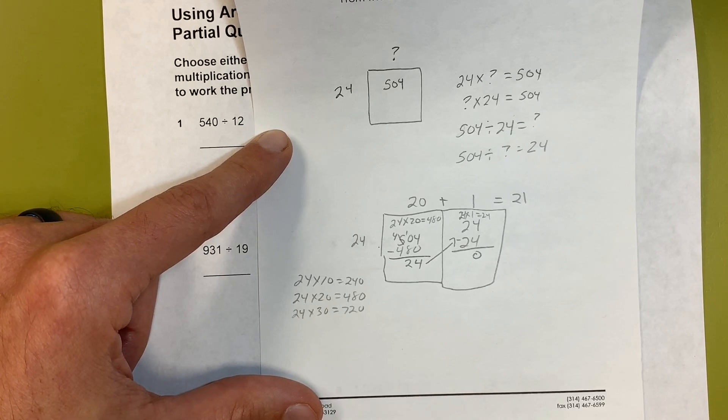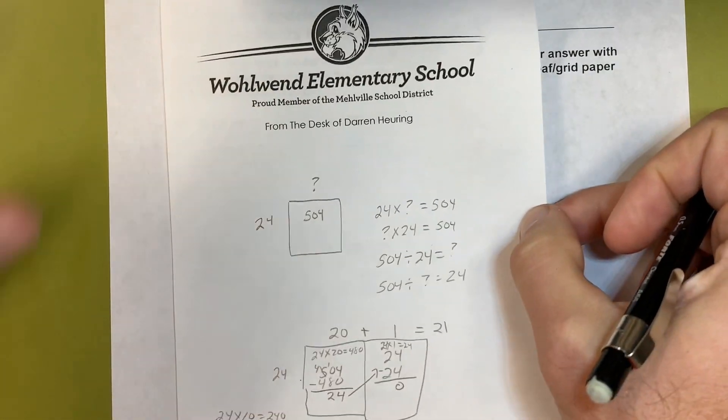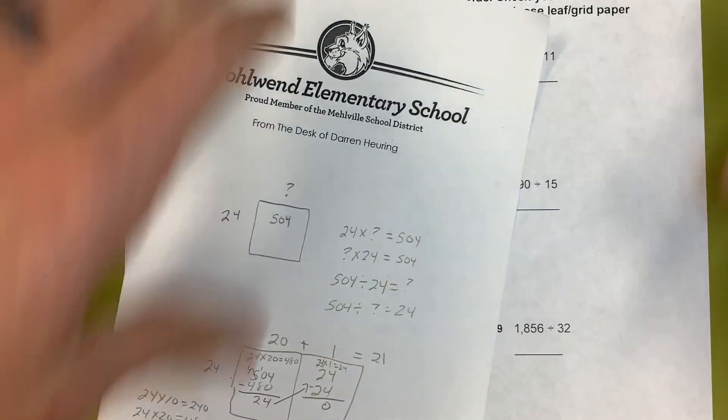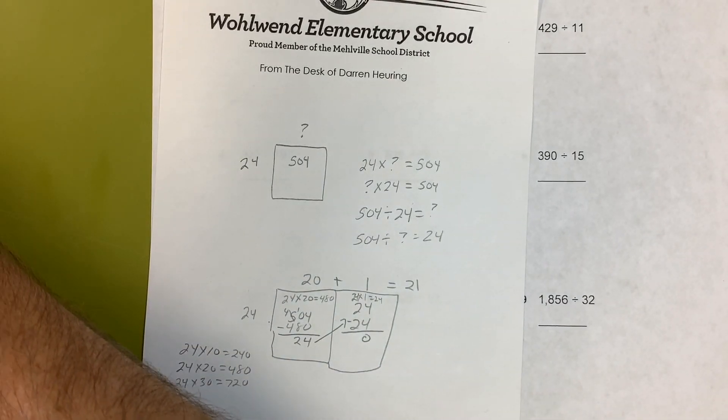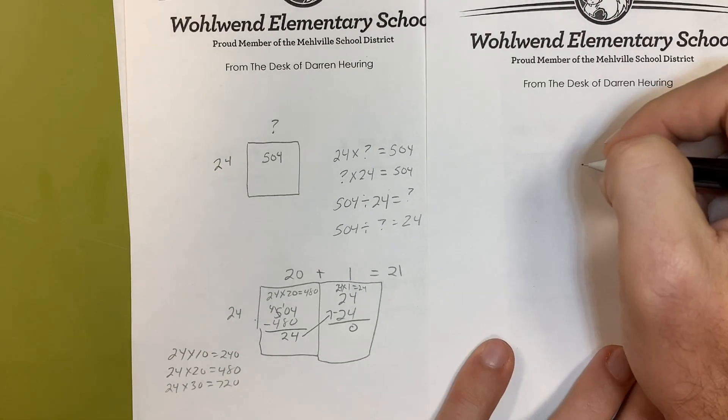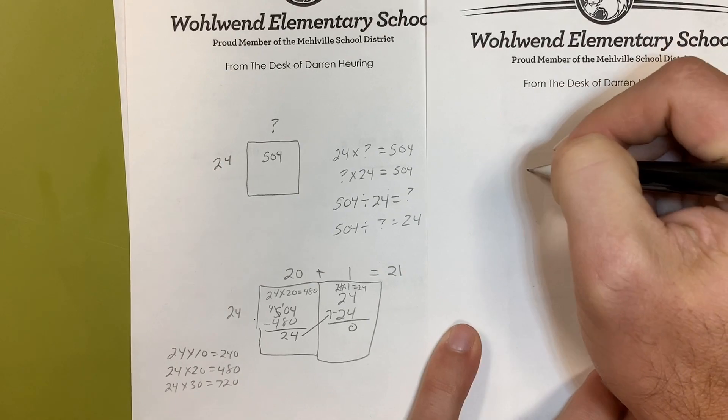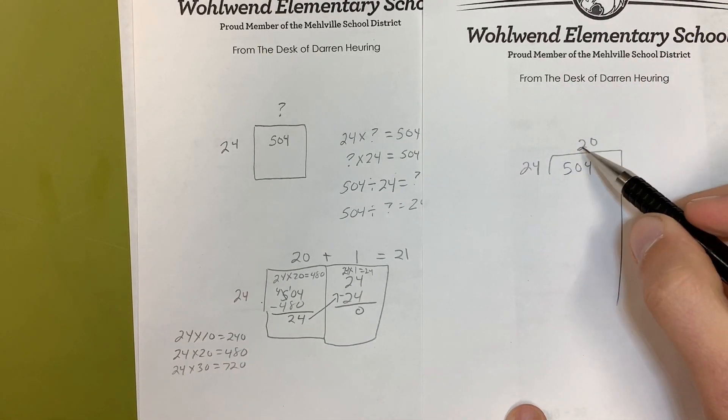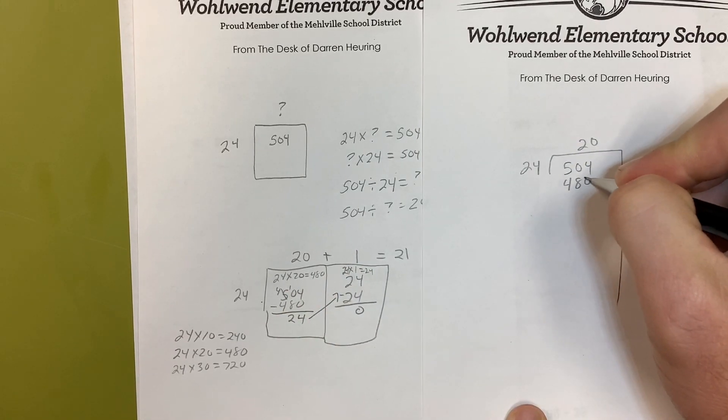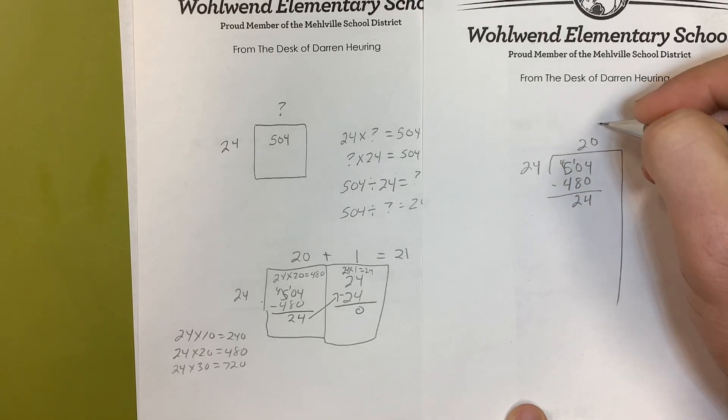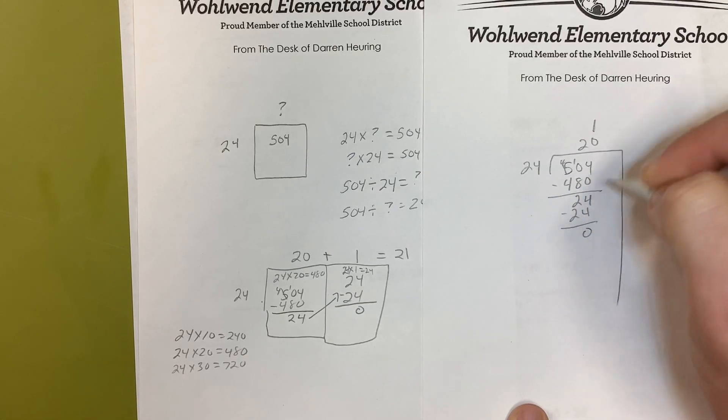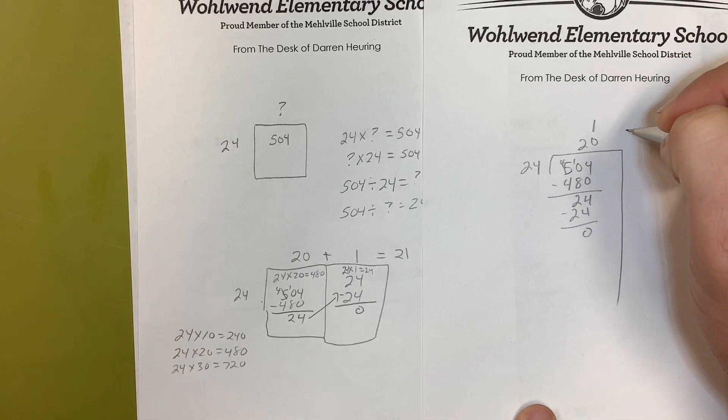Once we understand that, let's look at the same problem in partial quotient. Partial quotient is going to stack it up more vertically. Since I have my numbers from before, I used 20 the first time. 20 times 24 is 480. I subtracted that and got 24. So next I know it's a one. I put my next partial quotient up there: 24 times one is 24. When I'm done, I'm just going to add whatever's up here together and get 21.